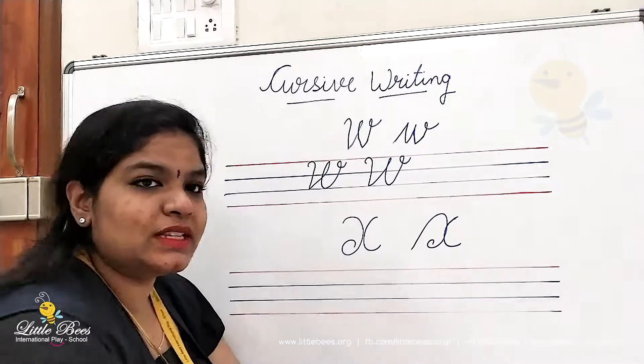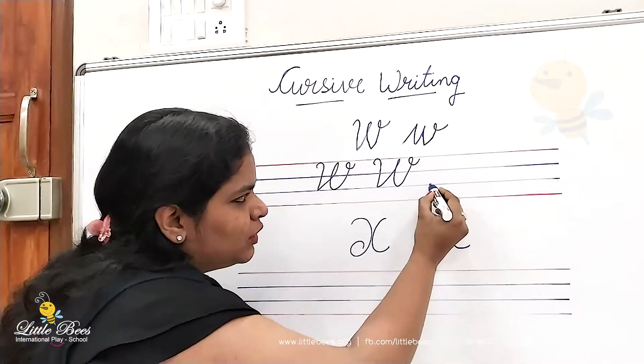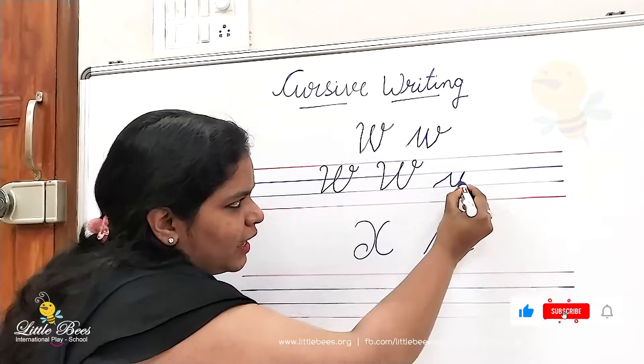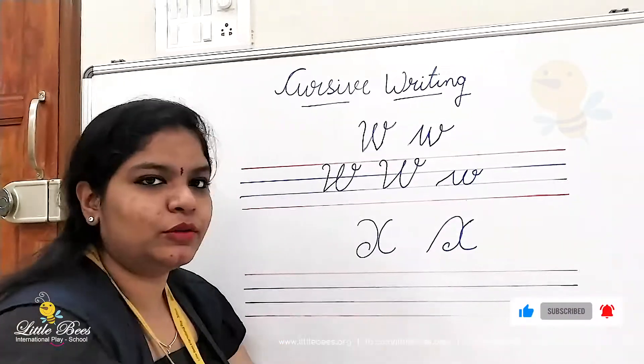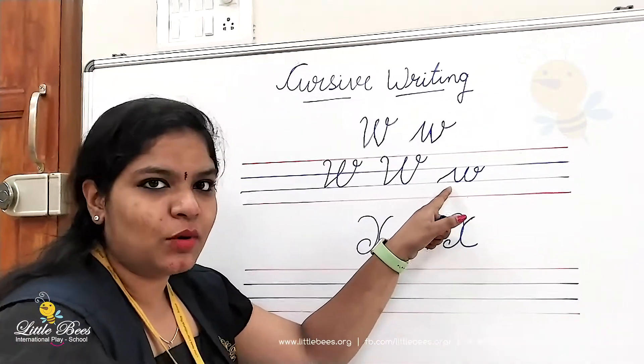Okay, so now we will see how to write small w. Sliding line and W. This is how we write small w.